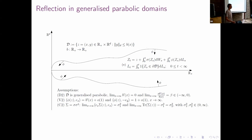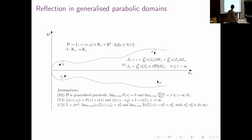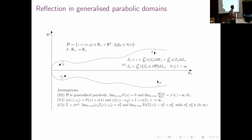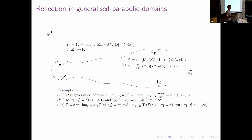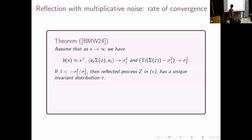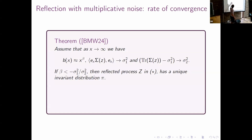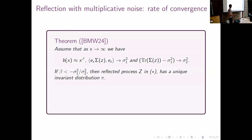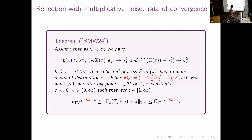The first question is: can we classify ergodicity under these general assumptions, and can we precisely classify the rate of convergence and see which parameters govern it? The answer is yes. Asymptotic assumptions on the domain and variance allow us to classify convergence, and they also govern the rate of convergence.